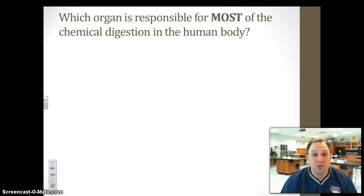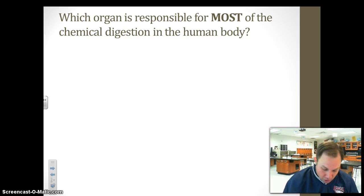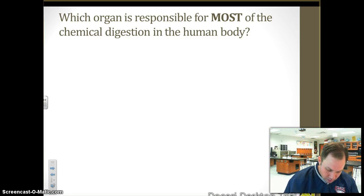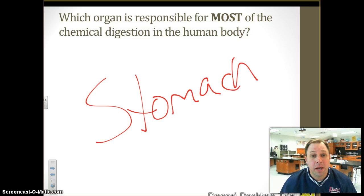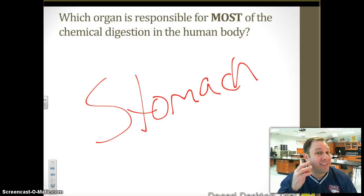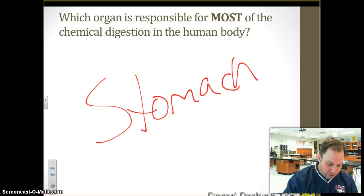Which organ is responsible for most of the chemical digestion in the human body? Most of the chemical digestion occurs in the stomach. And to summarize: most physical digestion occurs in the mouth, and most chemical digestion occurs in the stomach.